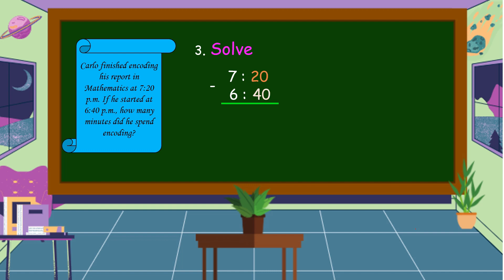20 minus 40. Can it be? We borrow 1 from 7, 7 becomes 6. And 20 becomes 80. How it becomes 80? Because we borrow 1 hour from 7, and that 1 hour is equivalent to 60 minutes. 60 plus 20 is equal to 80. 80 minus 40 is equal to 40. 6 minus 6 is equal to 0.